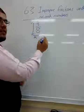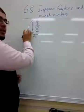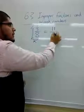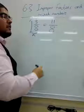So, it's a circle. So, you do 8 times 1, which is 8, plus 3, which is 11, over the denominator, which is 8.